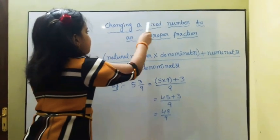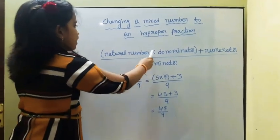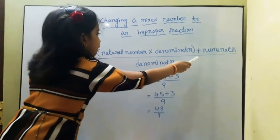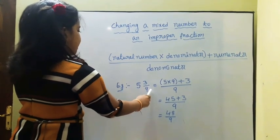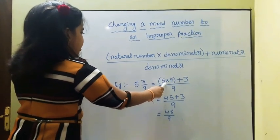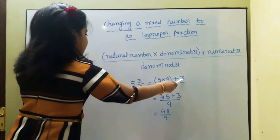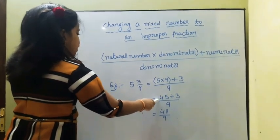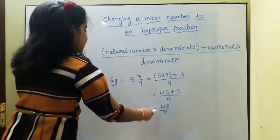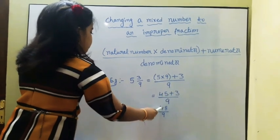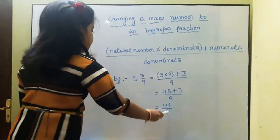Next, I am telling about changing a mixed number to an improper fraction. The formula is: natural number multiplied by denominator, plus numerator, over denominator. For example, 5 and 3 by 9: here 5 is the natural number, 9 is the denominator, and 3 is the numerator. So it equals 5 times 9 plus 3, over 9, which equals 45 plus 3 over 9, giving 48 by 9.